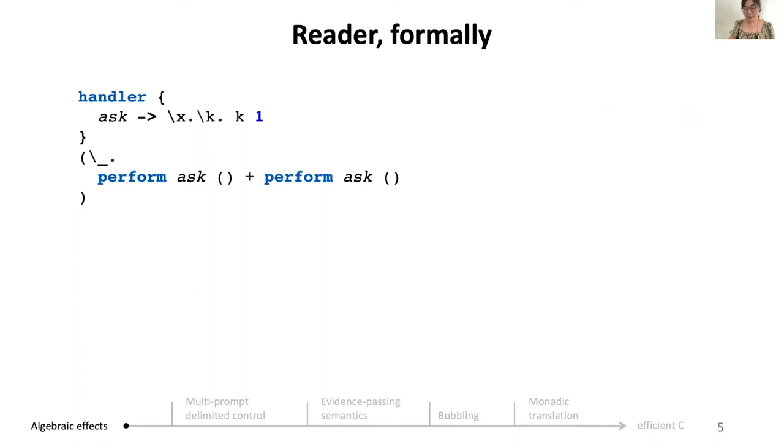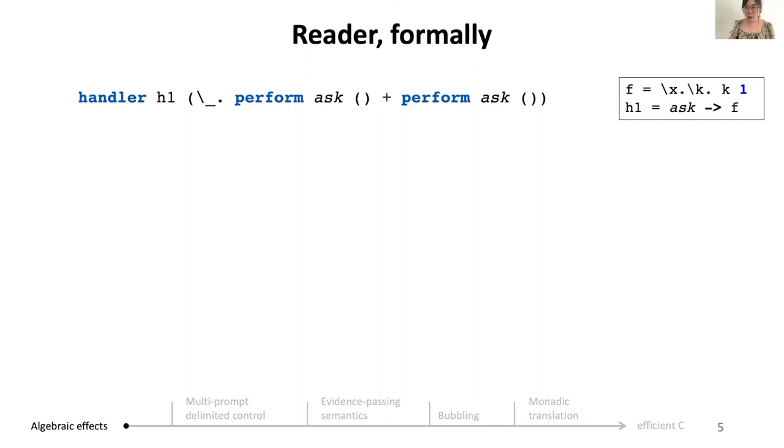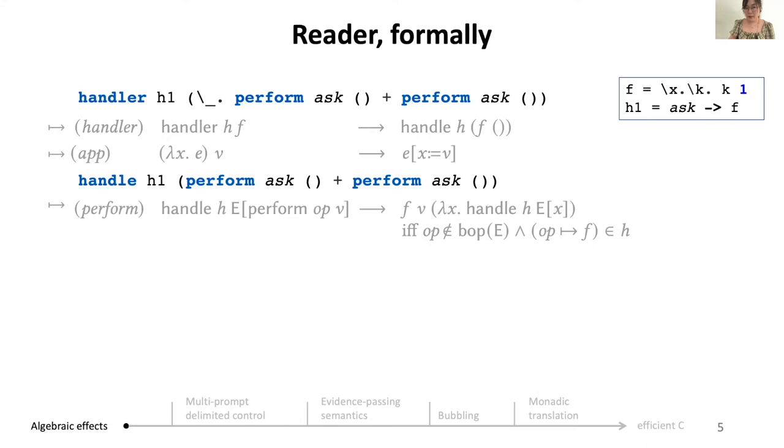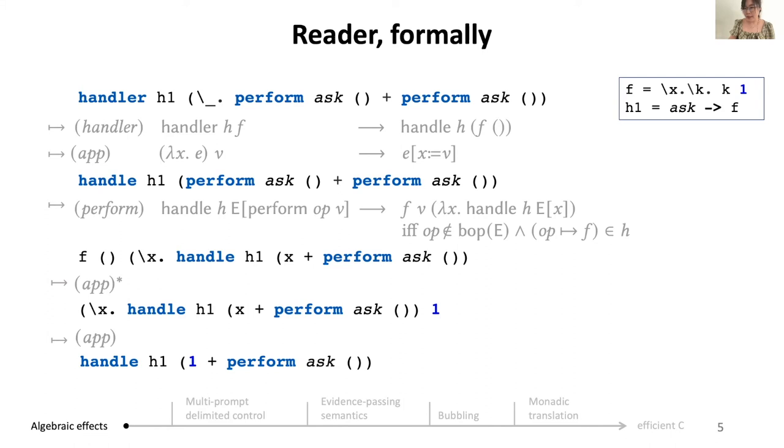We start by looking at the reader example again, but this time through the operational semantics. First, we put the definition of the handler on the top right and fit the program into one line. When evaluating the expression, according to handler, we are going to execute the computation. And by app, we just substitute the unit away and get a handle expression. Now we evaluate the first perform. We need to find the innermost handler, in this case h1. So we evaluate the expression into f applied to the argument unit and the resumption. f says it is going to apply its second argument to 1, which further gives us this. As the second perform ask will be handled in a similar manner, the final result will be 1 plus 1, which is 2.